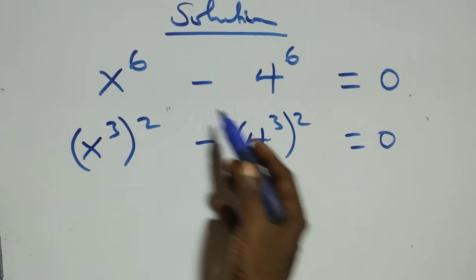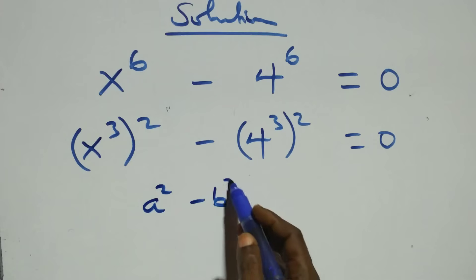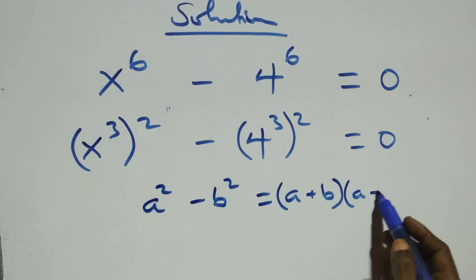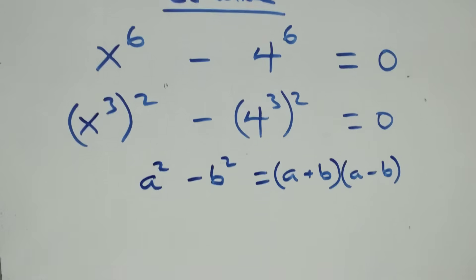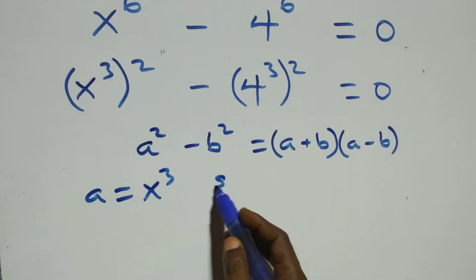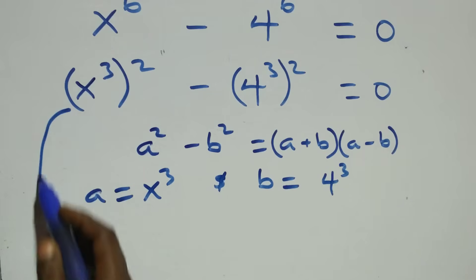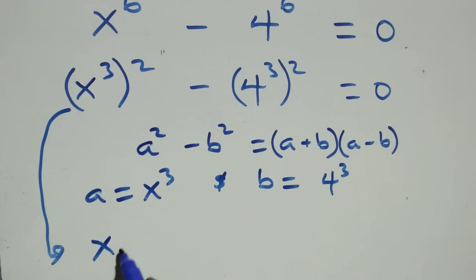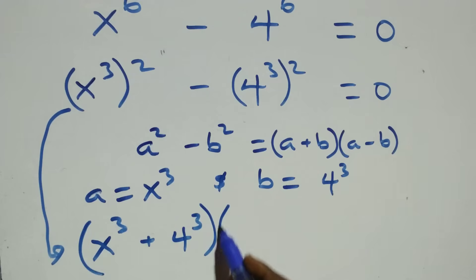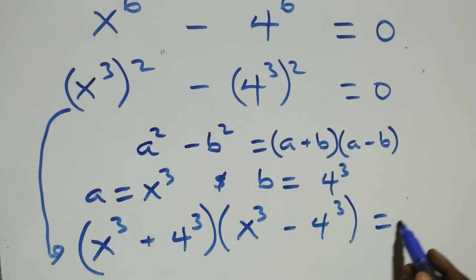As 2 times 3 gives us 6, this follows the pattern of a squared minus b squared, which factors as a plus b into bracket a minus b. Here a stands as x raised to power 3 and b stands as 4 raised to power 3. So what we have becomes x raised to power 3 plus 4 raised to power 3, times x raised to power 3 minus 4 raised to power 3, equals to 0.